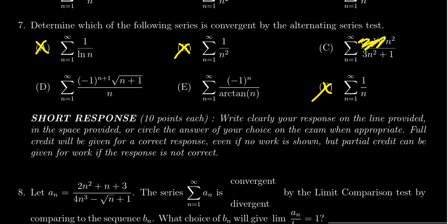Now if you look at option C, when you look at the sequence n² on top, 3n²+1 on the bottom, that sequence - and again I'm not talking about the series, I'm talking about the sequence - as you take the limit, the sequence is going to go off towards one-third.